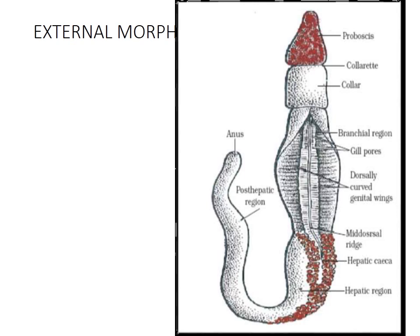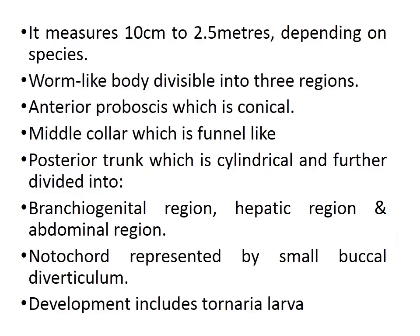The epithelial covering is completely covered with cilia. The body measures somewhere around 10 cm to 2.5 m depending on species. It has a worm-like body with an anterior proboscis which is conical, a middle collar that is funnel-like, and a posterior trunk which is cylindrical. The posterior trunk is divided into the branchial-genital region, the hepatic region, and the abdominal or tail region, which ends with the anus.